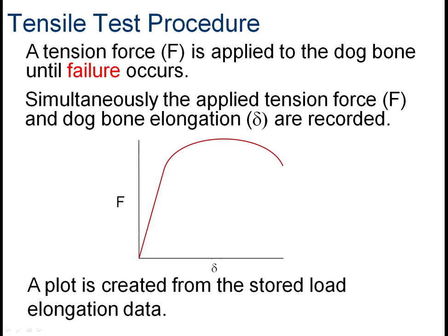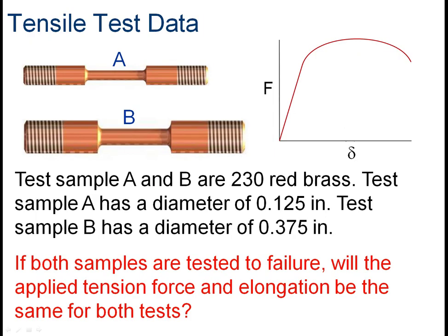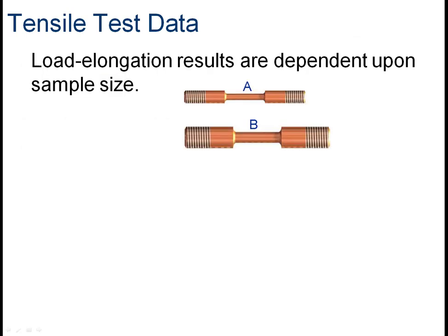That plot is useful, but there are some problems with it. If I take two samples A and B, and B is three times the diameter — so nine times the cross-sectional area — and I apply the same force to each, they won't respond the same way, because sample A has fewer molecular bonds resisting the force. If we test them to failure, the force and elongation will not be the same, because there's more material in sample B. The elongation and response to force are dependent on the sample size — both its length and its cross-sectional area.